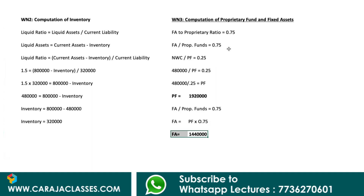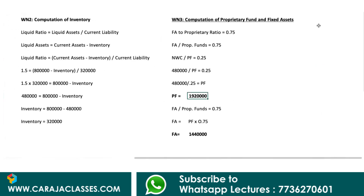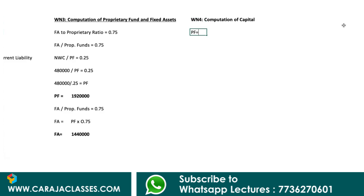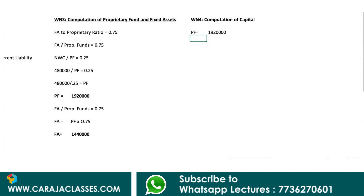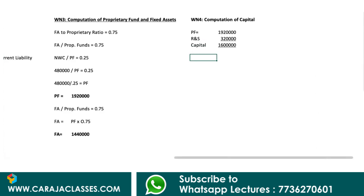Using the proprietary fund, we move to Working Note 4: computation of capital. Proprietary funds equals 19 lakh 20,000, and reserves and surplus from the question is 3 lakh 20,000. Deducting reserves and surplus from proprietary funds gives capital equal to 16 lakhs.